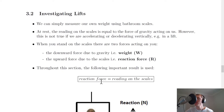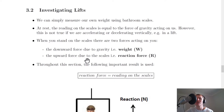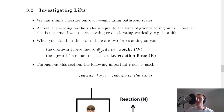We've looked at mass and weight because we'll be talking about weight when investigating lifts. We can measure our own weight using bathroom scales — at rest, the reading equals the force of gravity acting on us. However, this is not true if we are accelerating or decelerating vertically, for example in a lift. When you stand on scales, there are two forces acting on you: the downward force due to gravity, i.e. weight W, and the upward reaction force R from the scales.